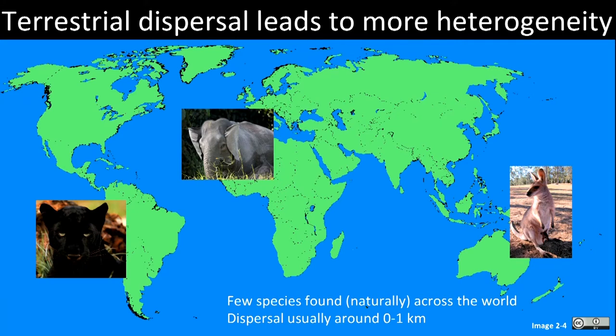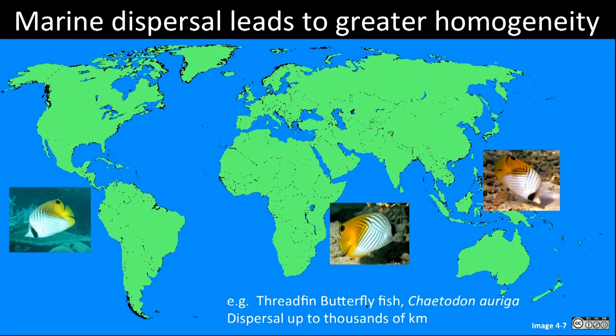Take mammals, for example. There are very different types of mammals within the Australian terrestrial environment as opposed to those in the African and South American environments. By contrast, the greater dispersal distances of marine organisms mean that many species can be found almost globally within temperate, tropical or polar environments. For example, the thread-fin butterfly fish, Ketodon origa, is found in Southeast Asia as well as the Indian and Pacific Oceans — a range that is rarely the case for terrestrial species. These differences have major ramifications for the structure of marine populations, resulting in different problems and solutions when it comes to their management.